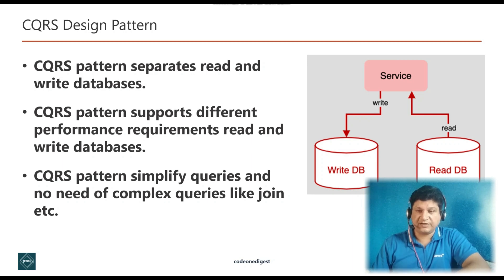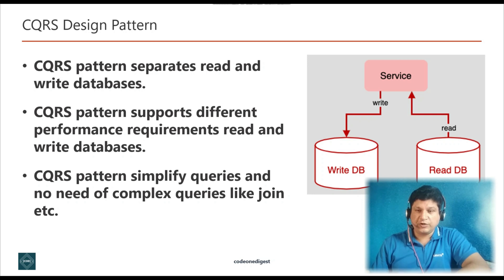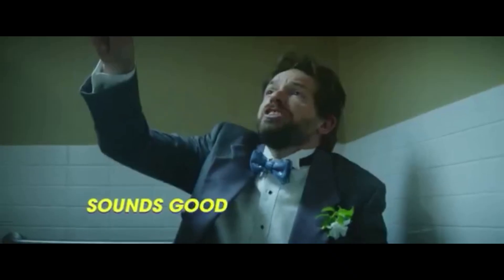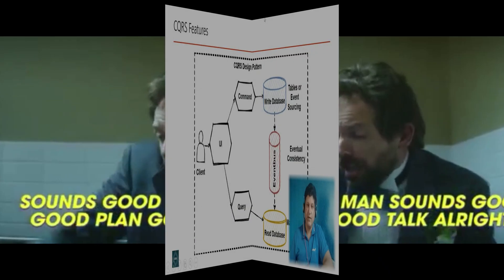Use CQRS to avoid complex queries like inefficient joins. In a monolithic application, most of the time we have one database that must respond to both query and update operations — it handles complex join queries and also performs CRUD operations. But if the application grows more complex, these query and CRUD operations become unmanageable. CQRS in microservices architecture gives us the flexibility to scale up or down based on read and write requirements.